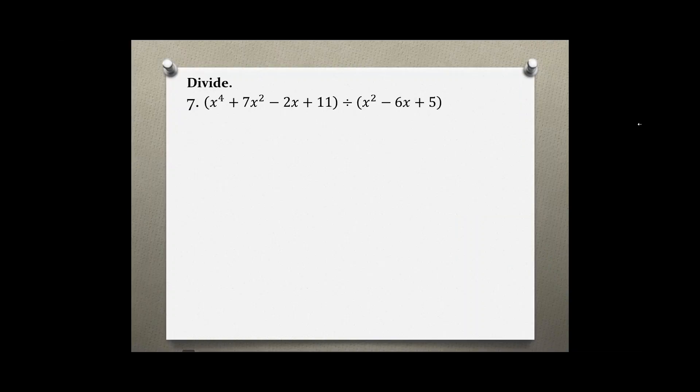Divide. Problem number 7: x^4 plus 7x squared minus 2x plus 11 divided by x squared minus 6x plus 5.